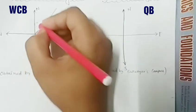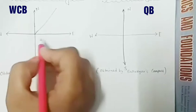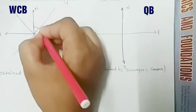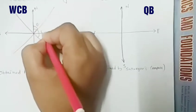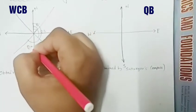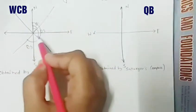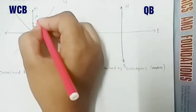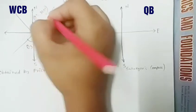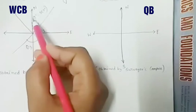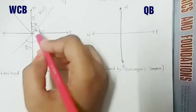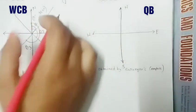In Whole Circle Bearing, the angles are taken clockwise from north towards the survey lines. Suppose this angle is theta one, this is theta two, this is theta three. The angular value of the full circle system goes from zero to 360 degrees, so the angle can be any value between zero to 360 degrees.